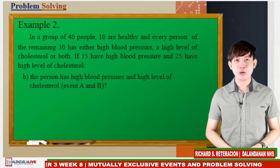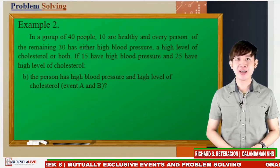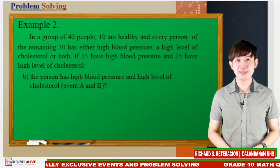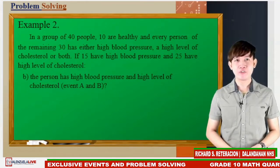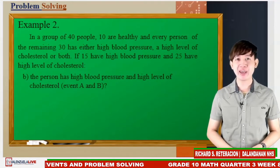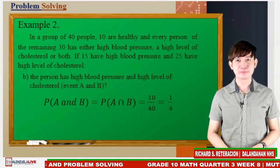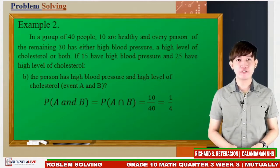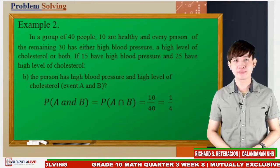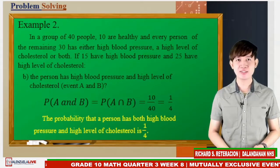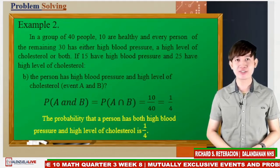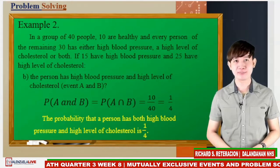Letter B: What is the probability that a person has high blood pressure and high level of cholesterol? This is event A and B. From letter A, 10 out of 40 people have both conditions. Therefore, the probability of event A and B equals 10 over 40 or 1 fourth. Thus, the probability that a person has both high blood pressure and high level of cholesterol is 1 fourth or 25%.